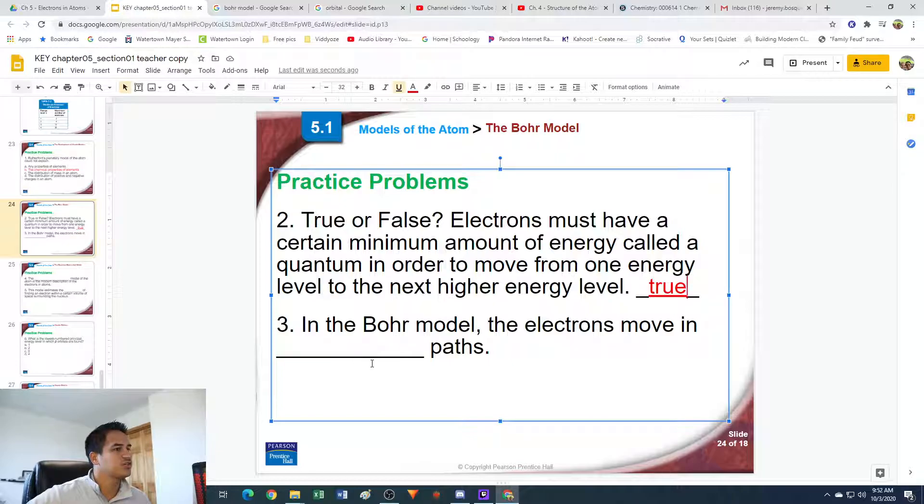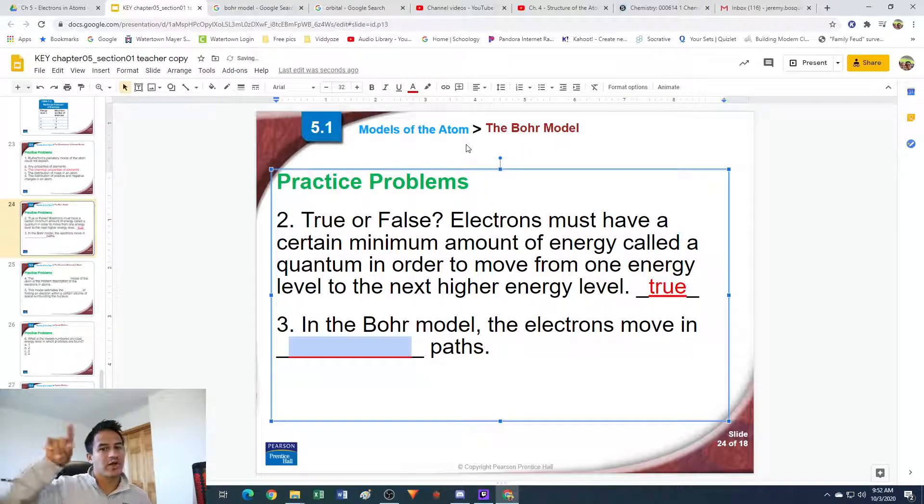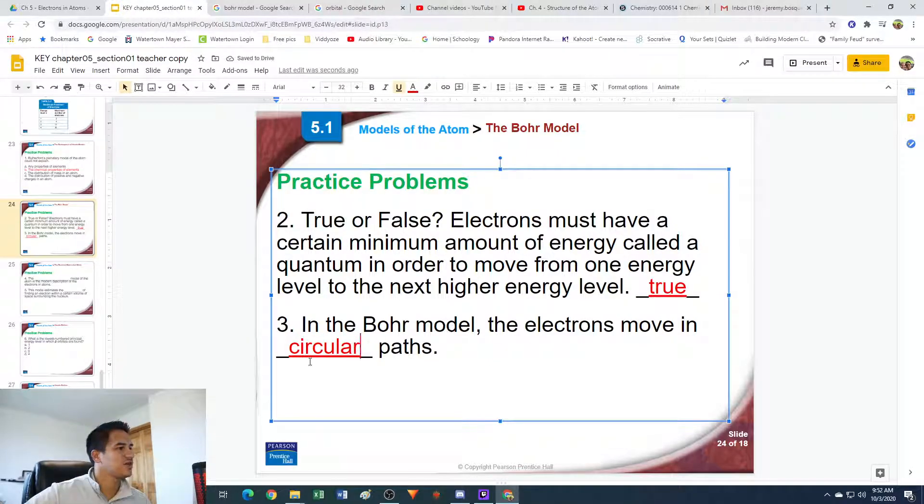Number three. In the Bohr model, the electrons move in blank paths. He said that they moved in orbits, which are two-dimensional circular paths. So, circular paths. We'll just leave it as circular.